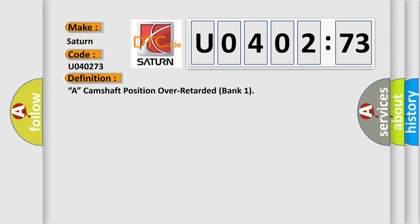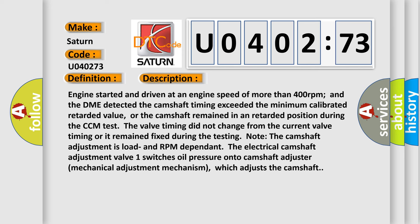And now this is a short description of this DTC code. Engine started and driven at an engine speed of more than 400 RPM, and the DME detected the camshaft timing exceeded the minimum calibrated retarded value, or the camshaft remained in a retarded position during the CCM test. The valve timing did not change from the current valve timing or it remained fixed during the testing. Note the camshaft adjustment is load and RPM dependent. The electrical camshaft adjustment valve one switches oil pressure onto camshaft adjuster mechanical adjustment mechanism, which adjusts the camshaft.